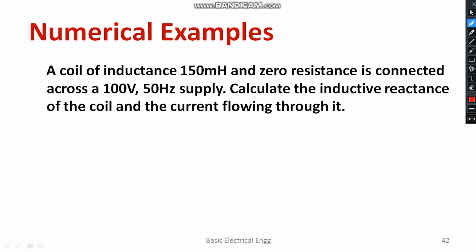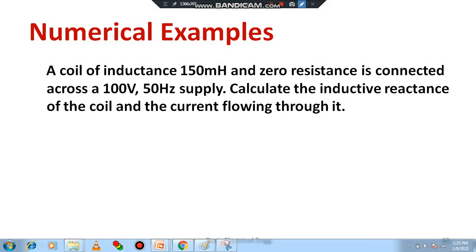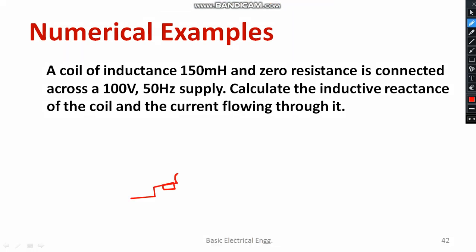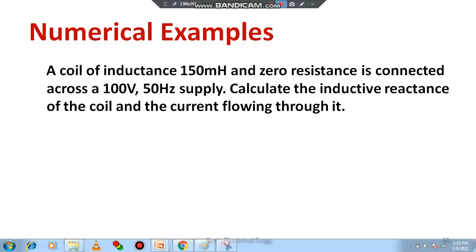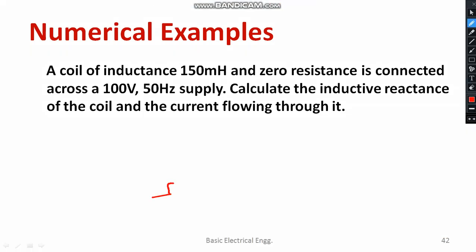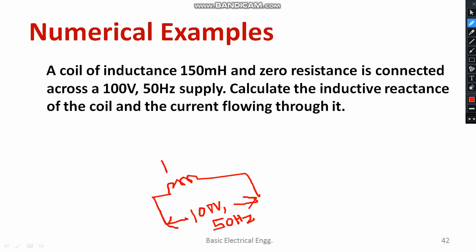Now let's solve a problem. A coil has an inductance L = 150 milli-henry, connected to a supply of 100 volts at 50 Hz. You can draw the coil and the supply system accordingly.